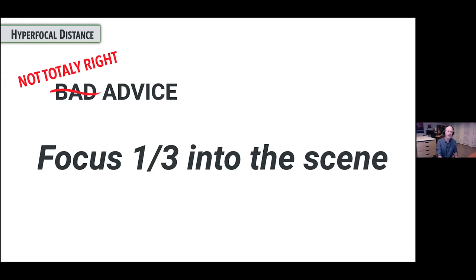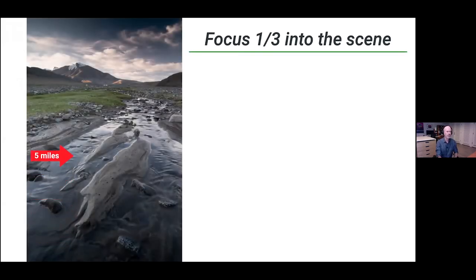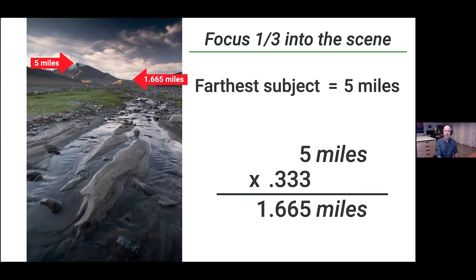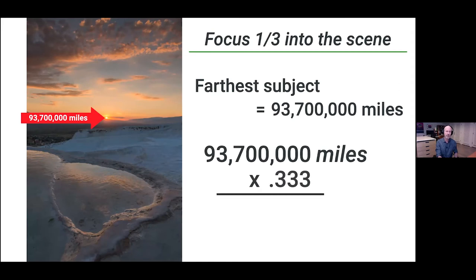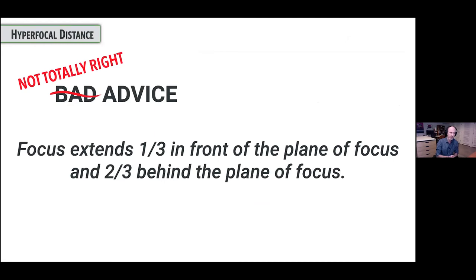Some people have switched this out and said to focus one third into the scene depth-wise, but that doesn't always work so well either. If the furthest thing in the frame is a mountain five miles away, one third of five miles means focusing at 1.665 miles away — and lenses do not have focusing marks for that. What if you want the sun in focus? That's 93 million miles. What's one third? My lens doesn't have those markings. So this is just not totally right advice. The idea that focus extends one third in front and two thirds behind the plane of focus is also not totally right: a 35mm lens focused at 5 meters extends to 2.5 meters in front and 200 meters in back — that's 1% in front and 99% behind.